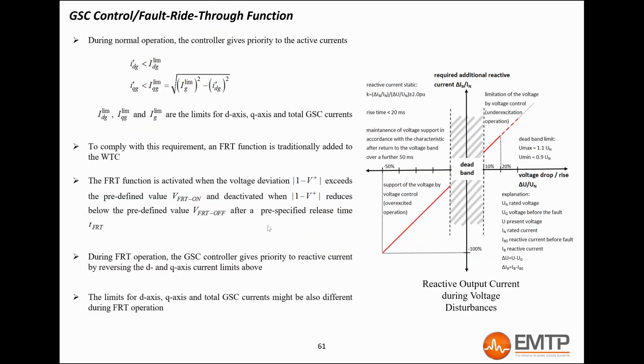Let's now explain the limiter device. During normal operation, the controller gives the priority to the active currents. The controllers are equipped with an FRT function to fulfill the grid code requirements regarding voltage support. The FRT function is activated when the grid voltage deviation is above a user-defined threshold, and is deactivated when the deviation goes back below another threshold. When the FRT function is active, the controller gives the priority to the reactive current.